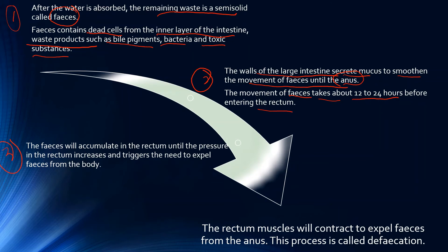The feces will accumulate in the rectum until the pressure increases and triggers the need to expel them from the body. The rectum will then contract to expel the feces from the anus. This process is called defecation.